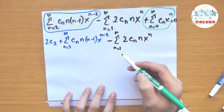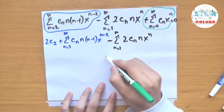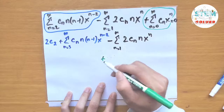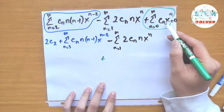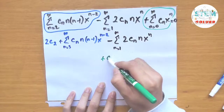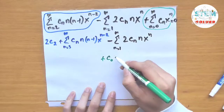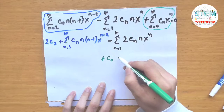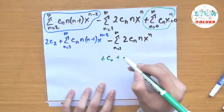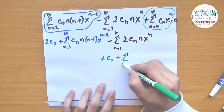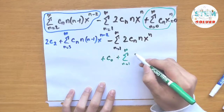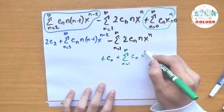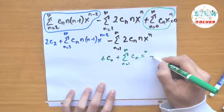For the y series, we run out one term: plugging in n equals 0 gives c_0 times x to the 0, which is 1. Plus the series from 1 to infinity of c_n times x to the n, all equal to 0.